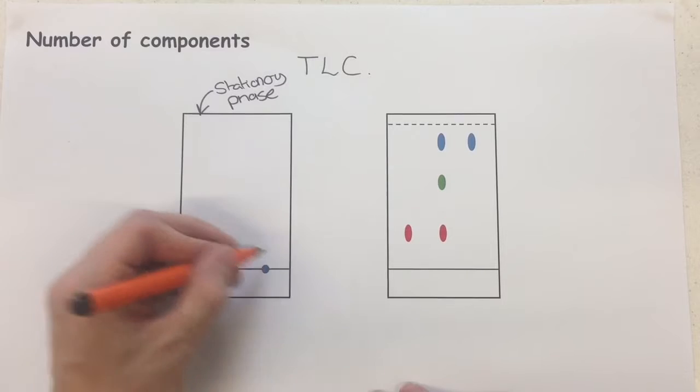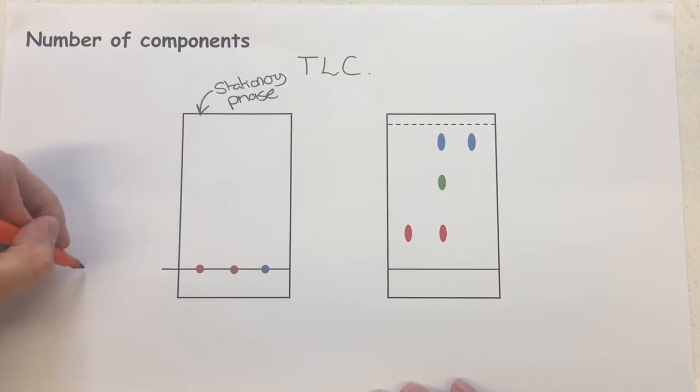Now at the bottom just here, I've got my sample line, which is what this is called, and here I've got three dots.